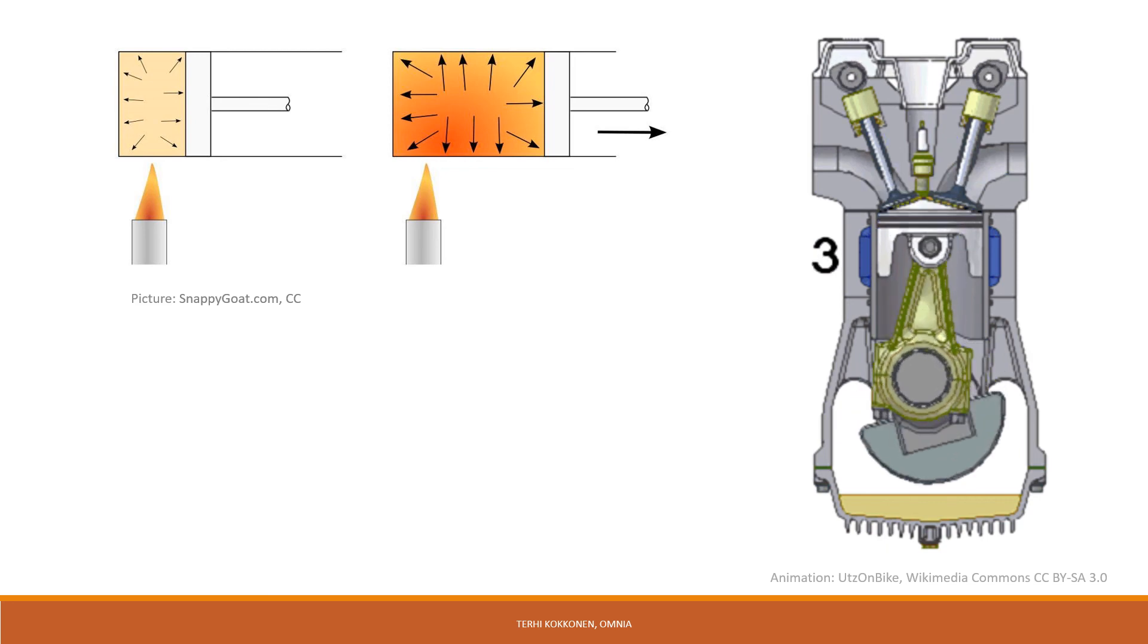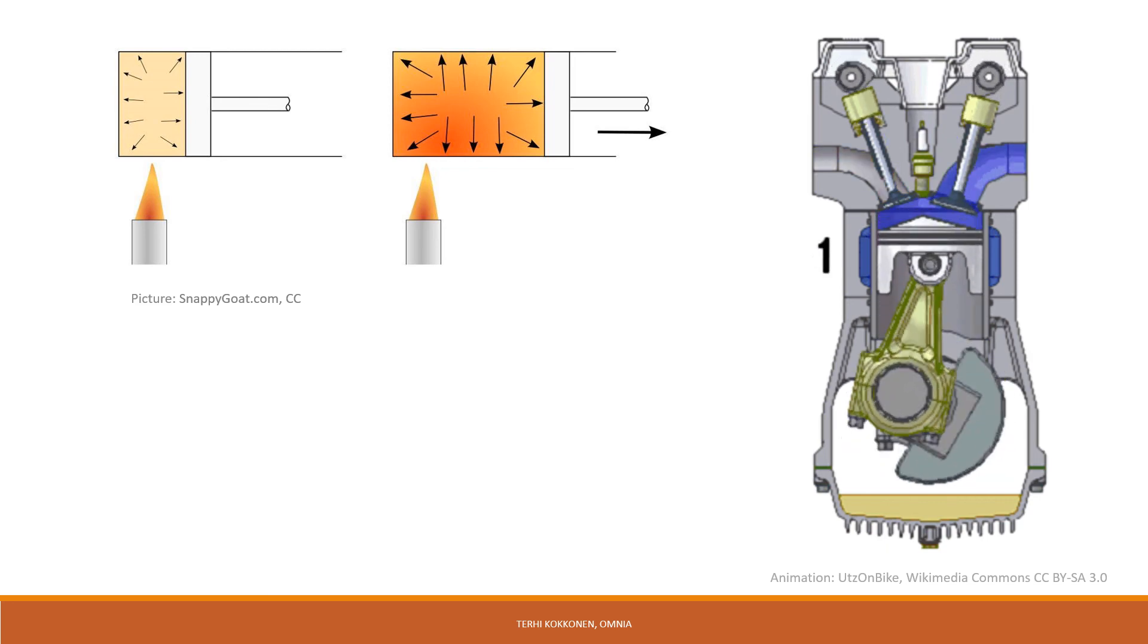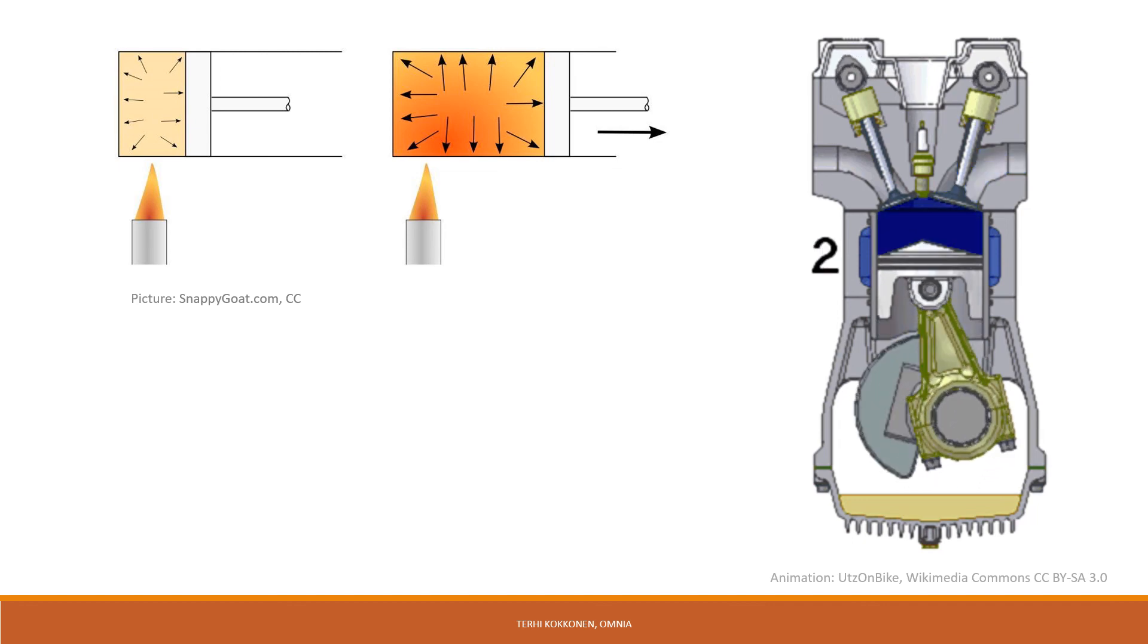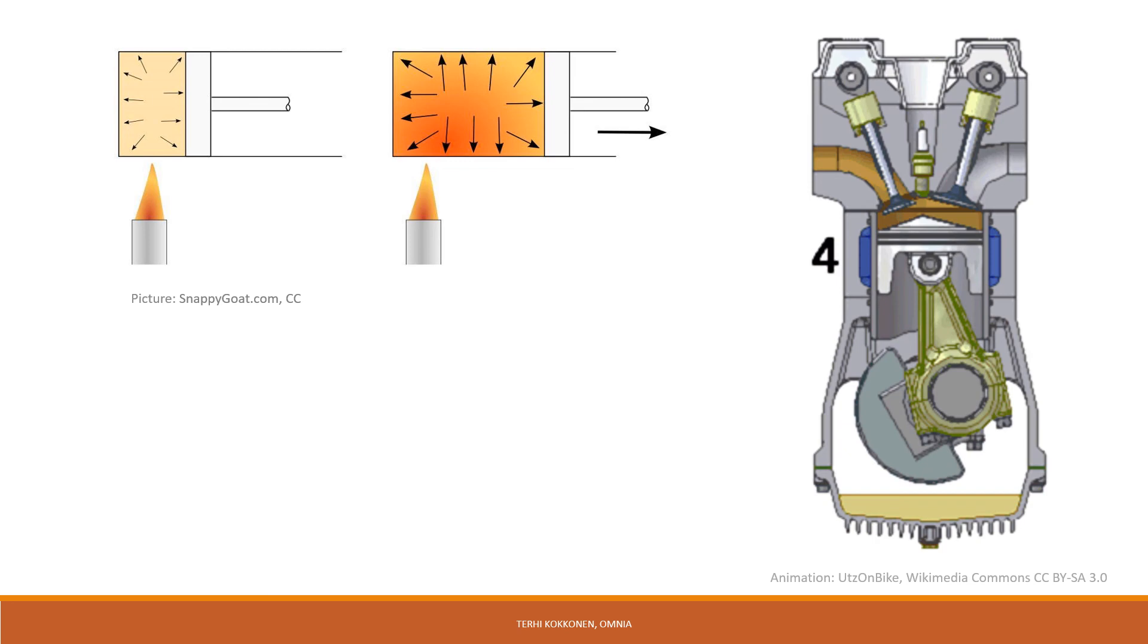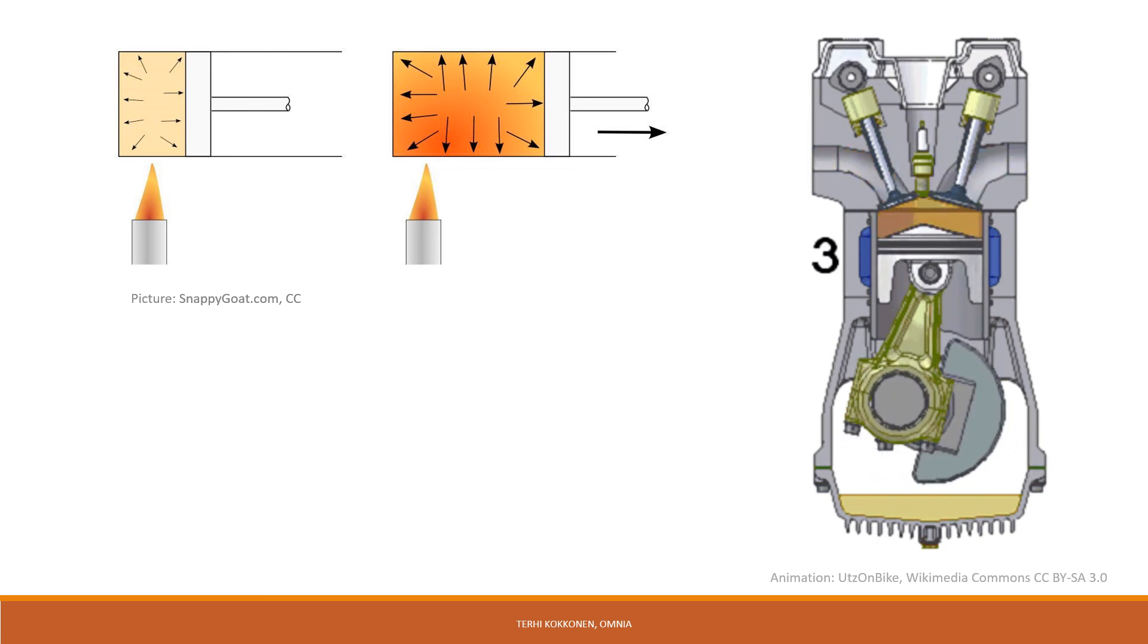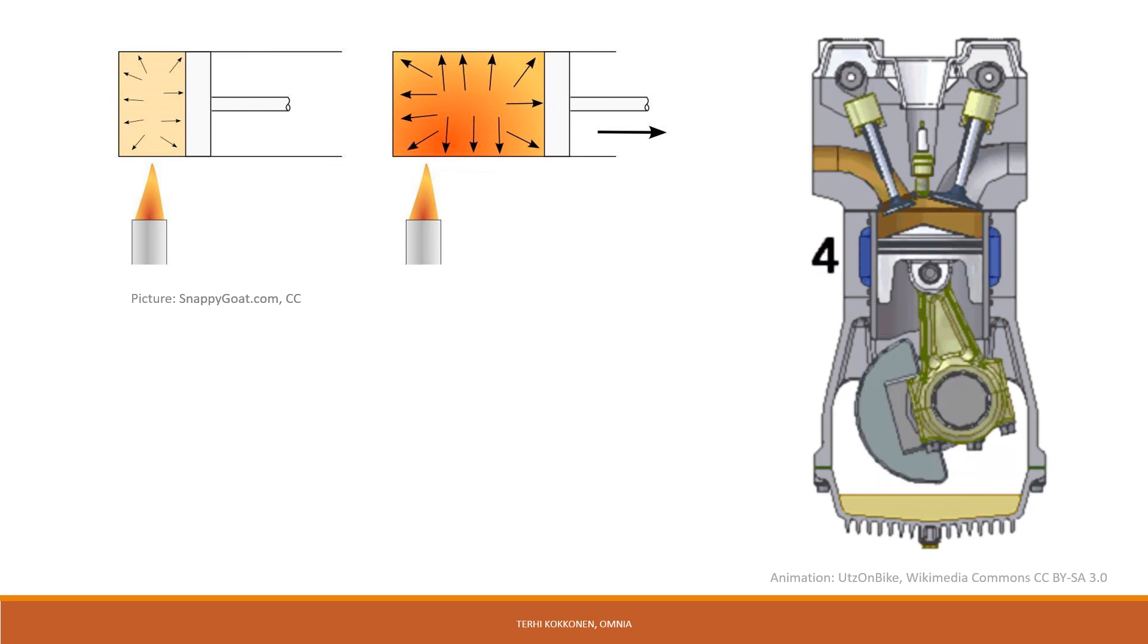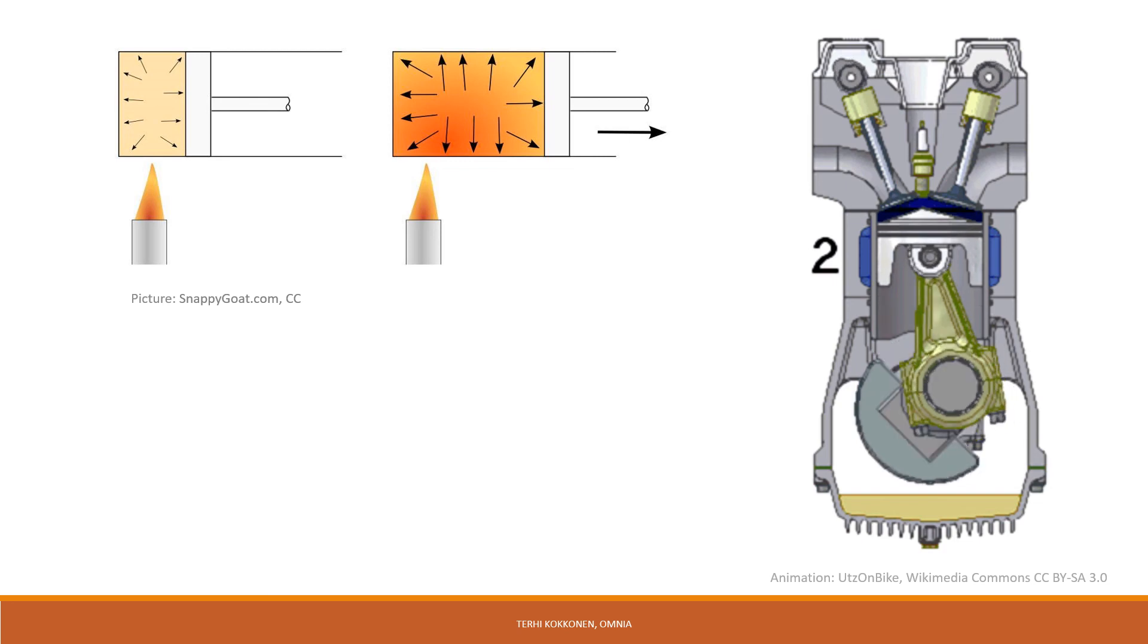For example, in a car engine, the heat from the combustion of the gasoline expands the gases in the cylinder to push back the piston. And this motion is then translated into the motion of the car.